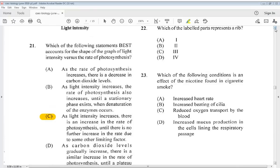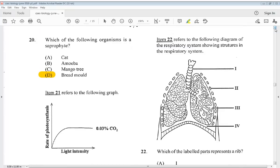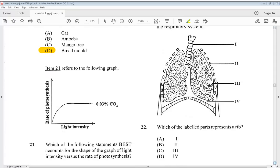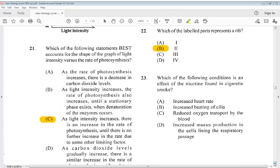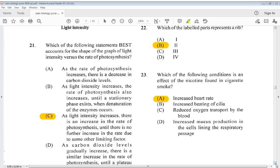Let's go to number 22. Item 22 refers to the following diagram of the respiratory system showing structures in the respiratory system. Which of the labeled parts represents a rib? Looking at our diagram, we know it would be in two. So B would be our answer. 23. Which of the following conditions is an effect of the nicotine found in cigarette smoke? The answer would be A. Increased heart rate.